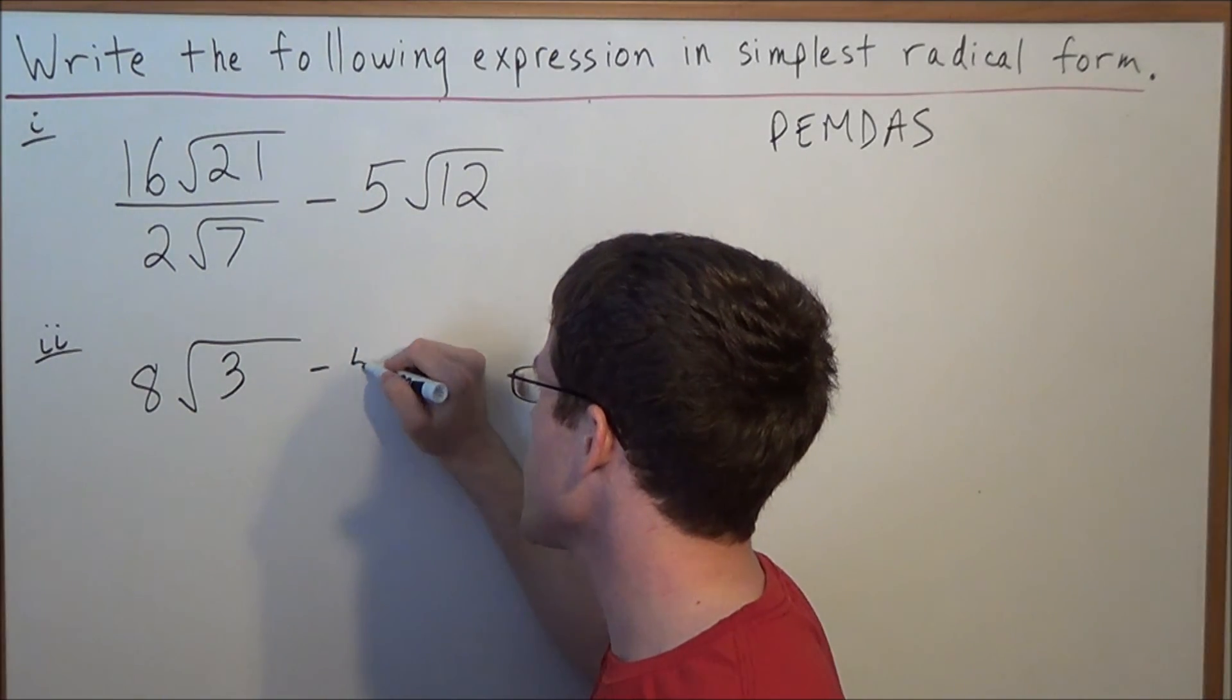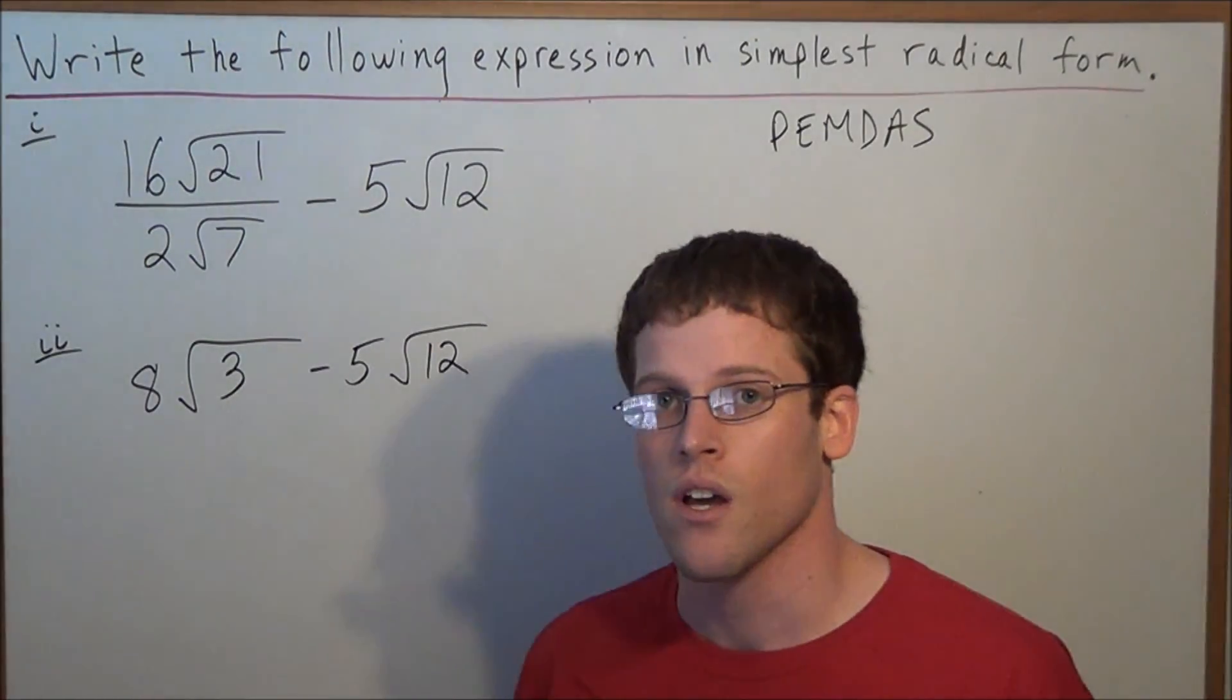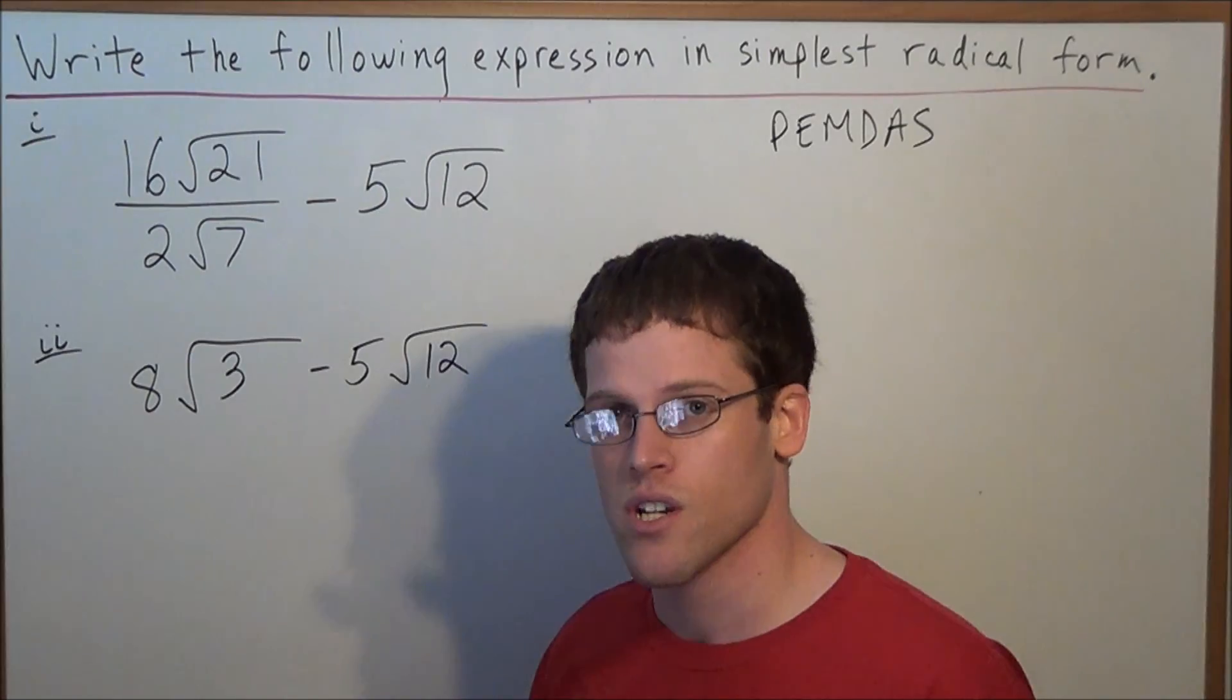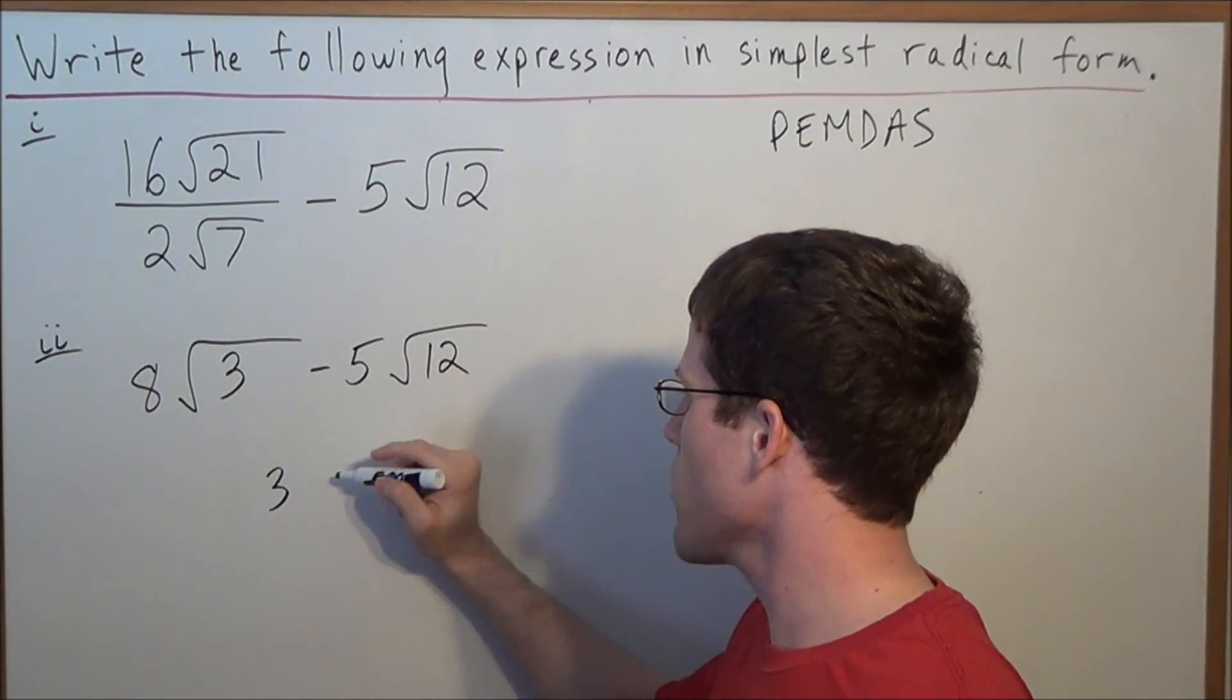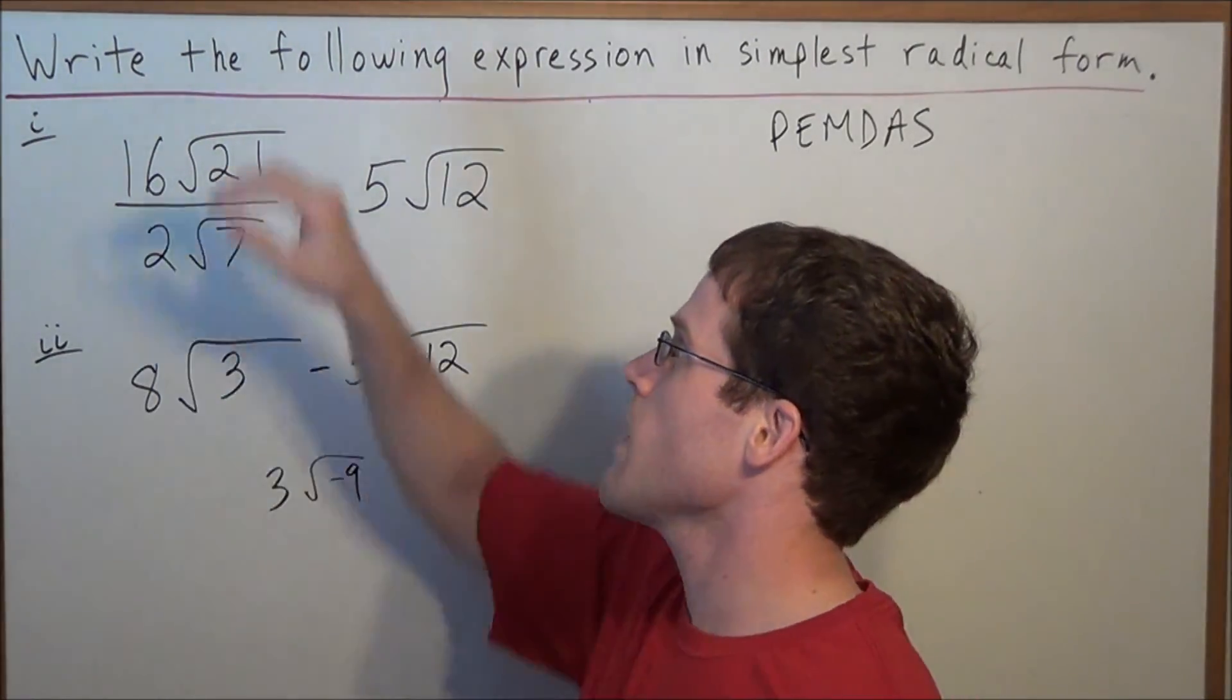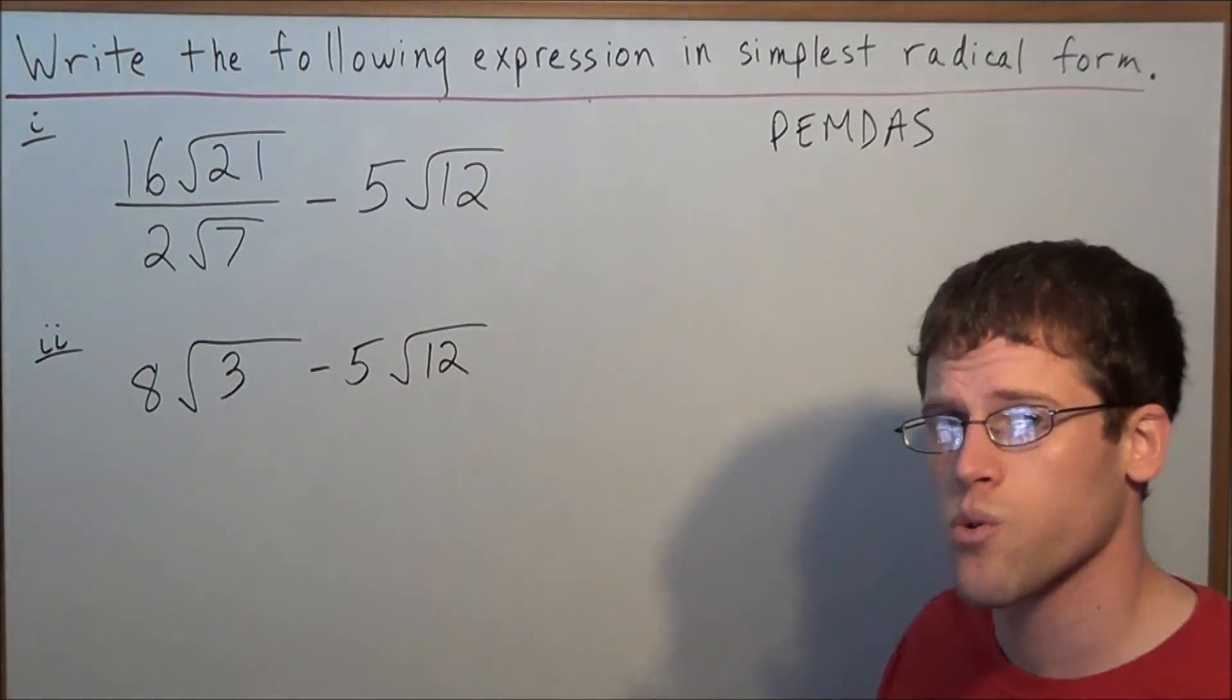And we're still subtracting the quantity 5 radical 12. But if you'll recall that when we subtract radicals, it's important to note that the numbers under the radical have to match. A lot of students will mess up here, and they'll do something like 8 minus 5 is 3, 3 minus 12 is negative 9, but there's no way we're going to start marching into the imaginary numbers. We can't take the square root of negatives just yet. So this tells us that we need to break down 12.